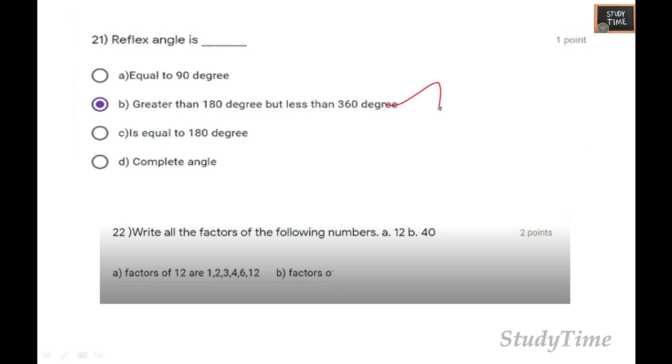What are all the factors of the following numbers? For 12, it will be 1, 2, 3, 4, 6, 12. For 40, you will be getting 1, 2, 4, 5, 8, 10, 20, and 40.